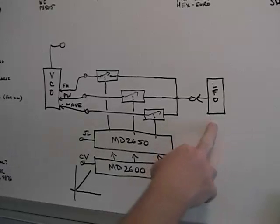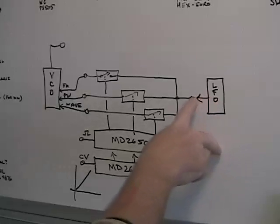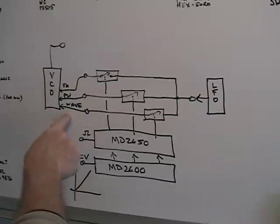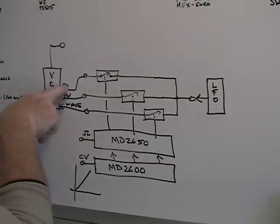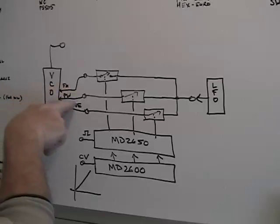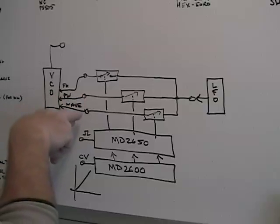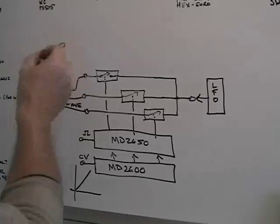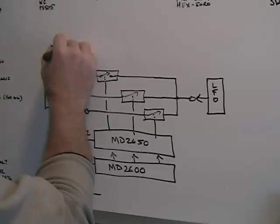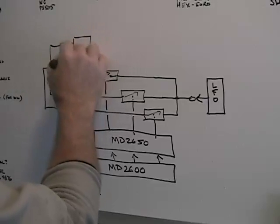Another thing you can do is reverse the situation and use one source of control voltages, say an LFO, and use the outputs to modulate a VCO. In this case, you could modulate the FM input, which is a variable input. You can modulate the pulse width and modulate the wave, and then mix the waveform outputs in your mixer.